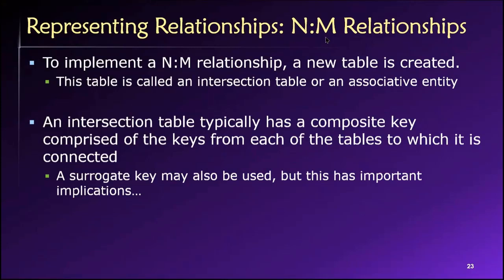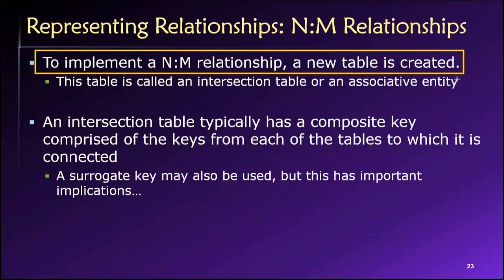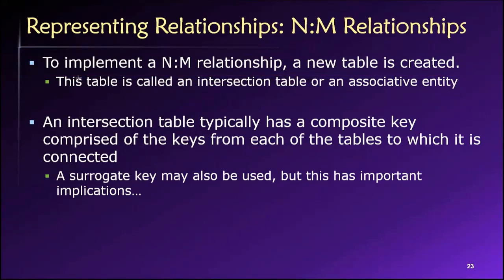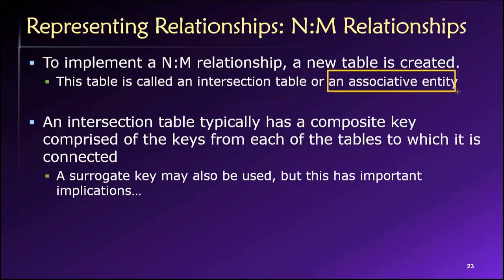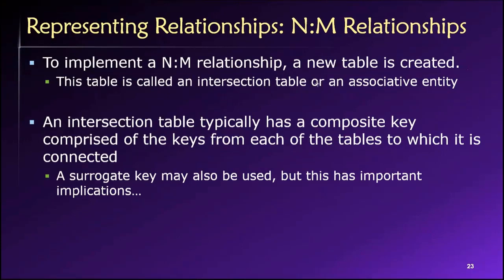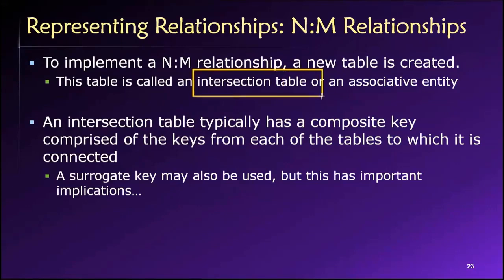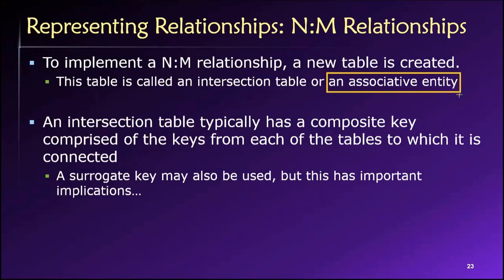As we now already know, hopefully this is review by now, to actually implement a conceptual many-to-many relationship, we need to add a third table in between them. That third table is called an intersection table or an associative entity. An associative entity is an intersection table that has a specific characteristic. Every associative entity is an intersection table, but not every intersection table is an associative entity. So there's something special about an associative entity — it's an intersection table with a specific characteristic.